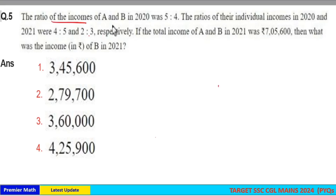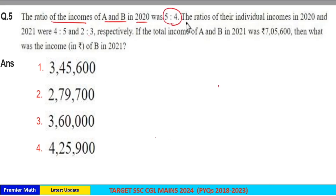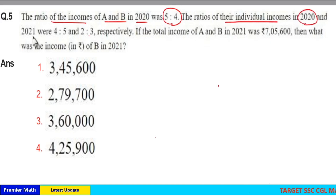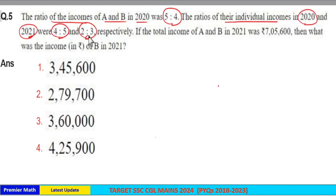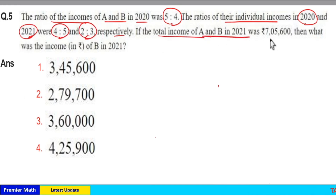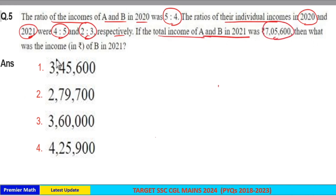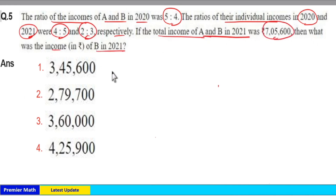The ratio of income of A and B in 2020 was 5:4. The ratio of their individual incomes in 2020 and 2021 were 4:5 and 2:3 respectively. If the total income of A and B in 2021 was 7 lakh 5600, then what was the income of B in 2021?